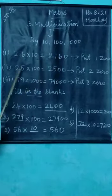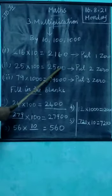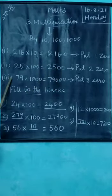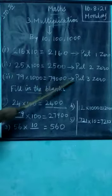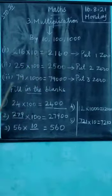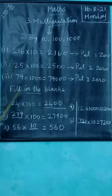To multiply by 10, add one zero to the right of the number. To multiply by 100, add two zeros. To multiply by 1000, add three zeros. This same rule applies in filling the blanks. Understand?